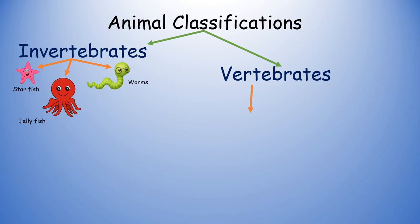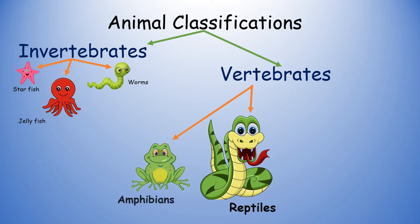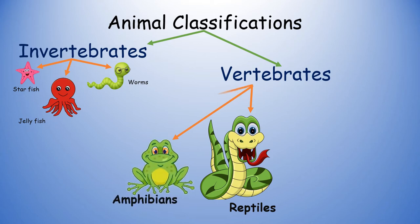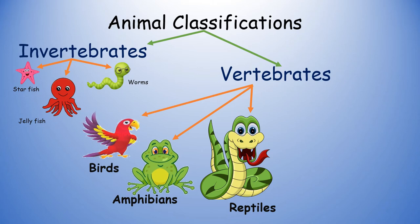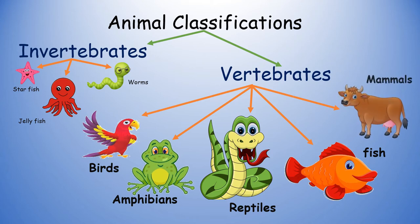Kinds of animals which can be grouped under vertebrates are reptiles, amphibians, birds, fish and mammals.